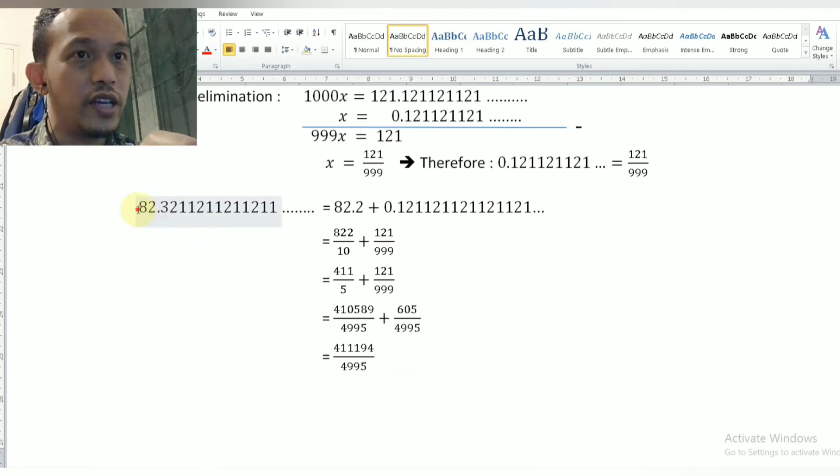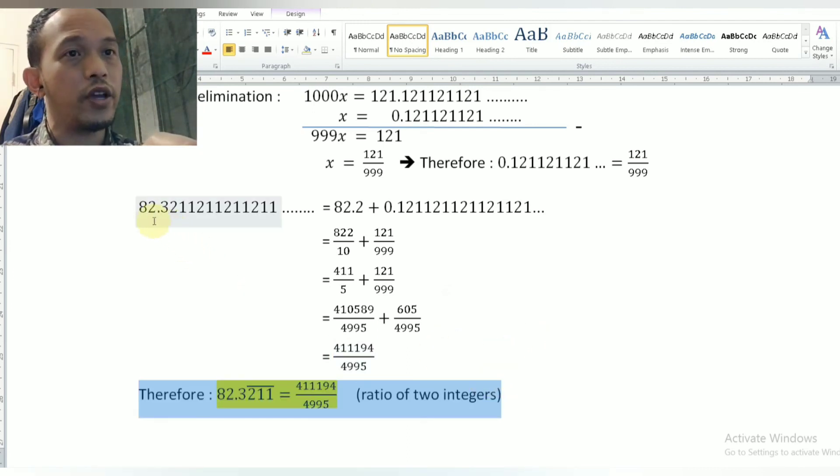So this repeating decimal will be exactly equal to this fraction, which is a ratio of two integers. Therefore, we can conclude that this repeating decimal is a rational number.